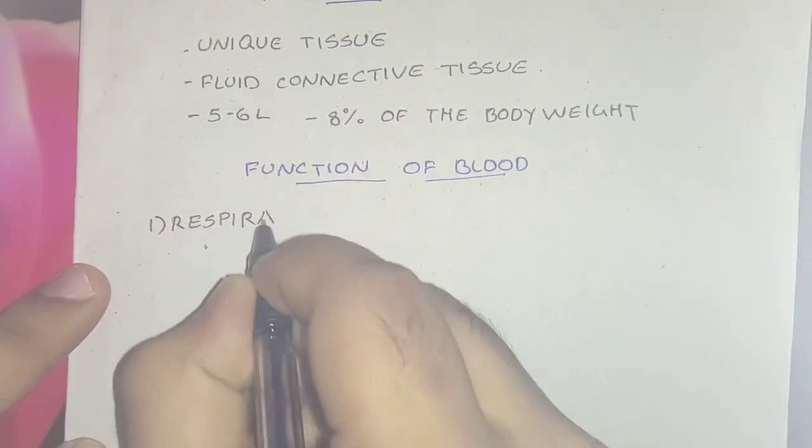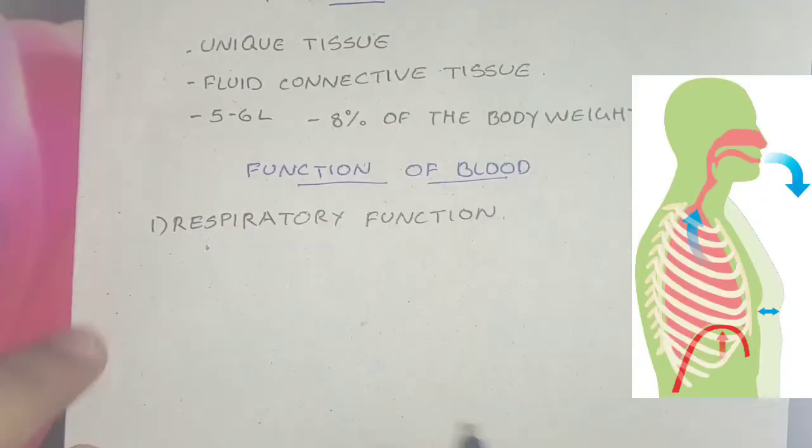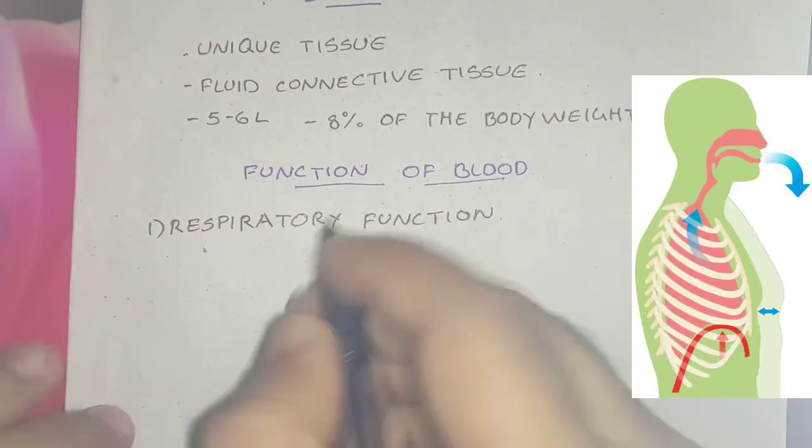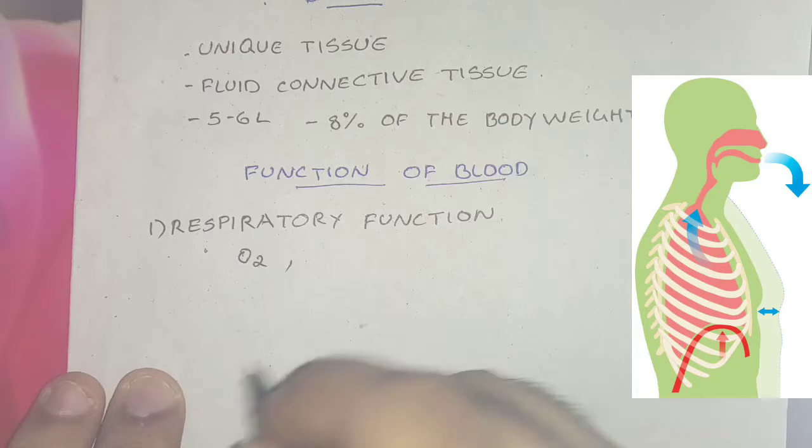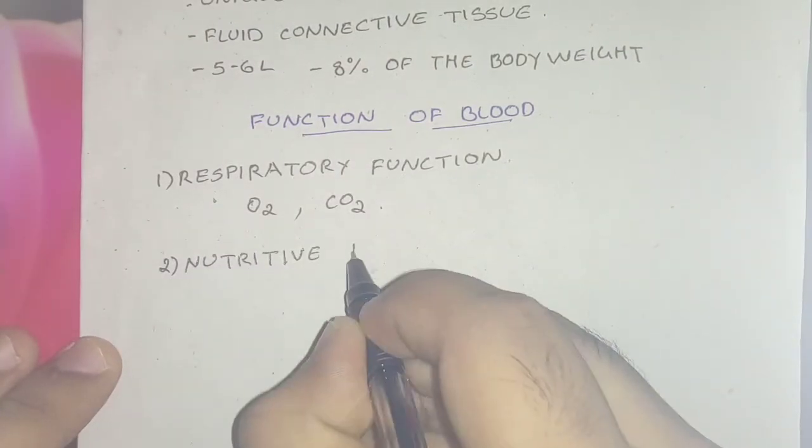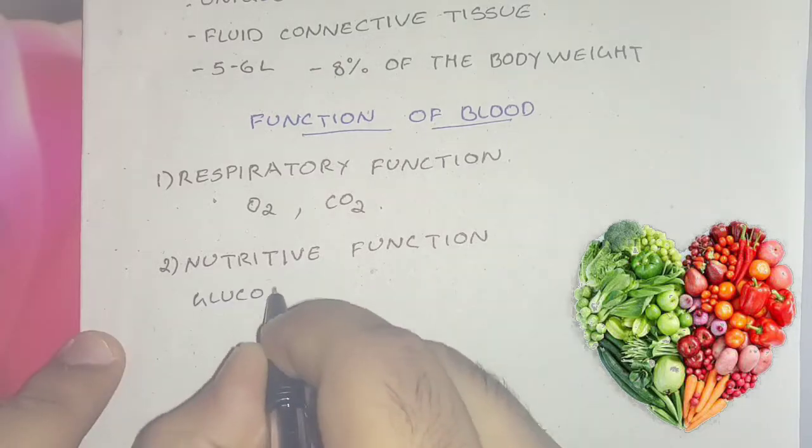For the functions of blood, the first function is the respiratory function. The blood carries oxygen from alveoli to tissue and carbon dioxide from tissue to lungs. The next one is the nutritive function.